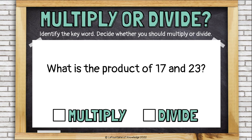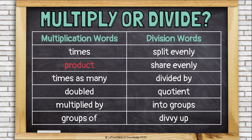What is the product of 17 and 23? Product is what you call the answer to a multiplication problem. So if you're being asked to find the product, you need to multiply.